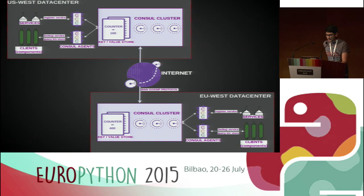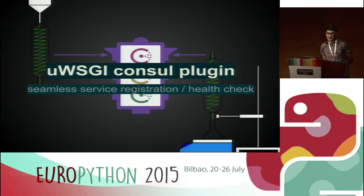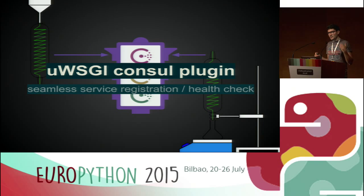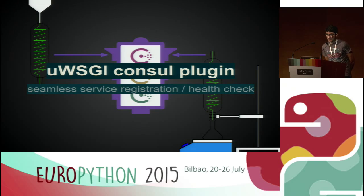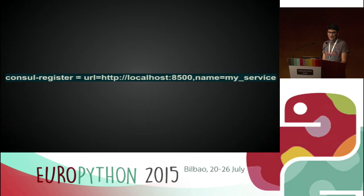There is a great integration: a Consul plugin for uWSGI. It will automatically register your application in the cluster when it starts successfully. uWSGI will handle the health checking — it periodically sends health checks saying the application is still alive, keeping the catalog fresh, without you having to code it yourself. Your stack helps you. If our application or uWSGI itself fails, the service will be removed from the Consul cluster automatically. It's just one line you add in the uWSGI config file.